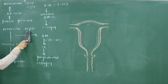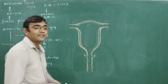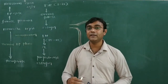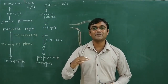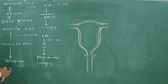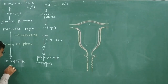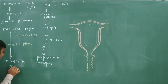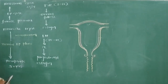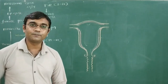At puberty, starting nearest to 12 years of age, the first menstruation begins — that is called menarche. And in females, around 50 years of age, menopause takes place, and at that time the menstruation cycle stops.